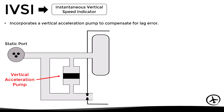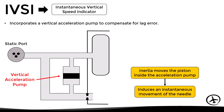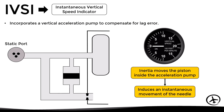This vertical acceleration pump consists of a piston inside a cylinder. The inertia moves the piston inside the acceleration pump up or down, inducing an instantaneous movement of the needle. For example, suppose the aircraft is in level flight and starts a sudden climb — in this case the inertia causes the piston to go down.